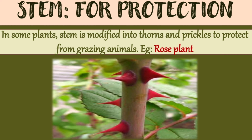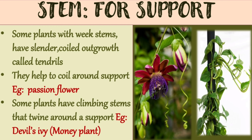For support, plants with weak stems have slender coiled outgrowths called tendrils that help coil around a support — an example is passion flower. Some plants have a climbing stem that twines around a support and needs it for growth — an example is devil's ivy, also known as the money plant.